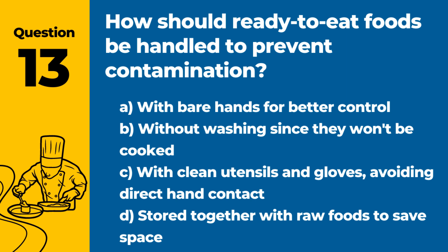Question 13. How should ready-to-eat foods be handled to prevent contamination? Answer: C. With clean utensils and gloves, avoiding direct hand contact. This practice minimizes the risk of contamination and ensures food safety.